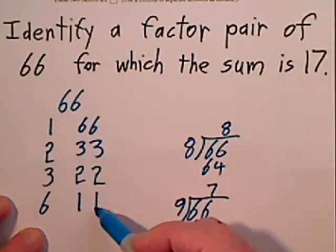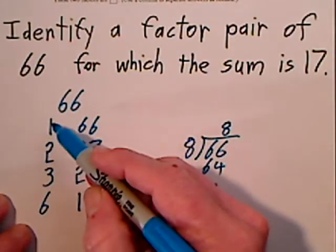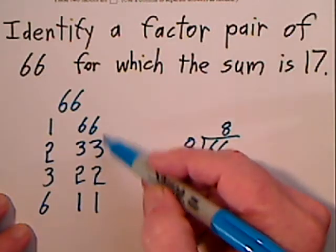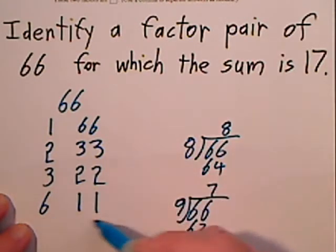When you get to 11, you've already covered that. So as these numbers get larger, these numbers get smaller. When they meet, you've listed all the factors.